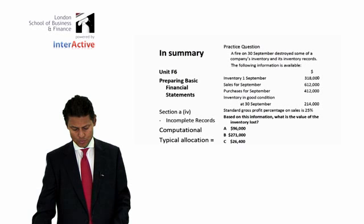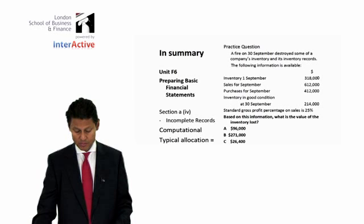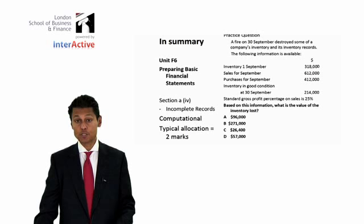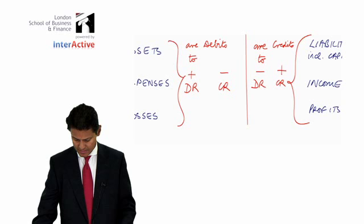Inventory, sales, purchases, inventory in good condition, and standard gross profit on sales is 25 percent. Based on this information, what is the value of the inventory lost in the fire? And as usual you're given A, B, C, and D, typically two marks of an allocation. But never worry about it because the next question could just take you a few seconds.